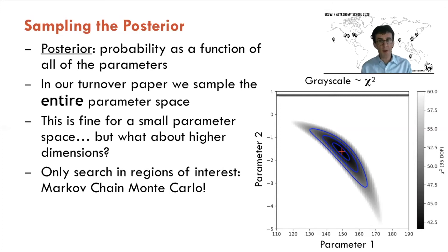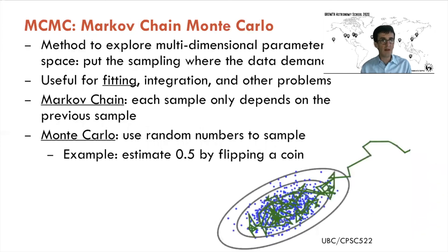For more parameters where we can't do a full grid search, we only want to search in regions of interest — where the data want us to go. The best way of doing this is a technique called Markov chain Monte Carlo. You let the probability itself determine where to sample. In a cartoon example, we try to sample a function shown by contours, and the MCMC robot evolves along a random path, eventually finding its way to the minimum and spending all its time there.